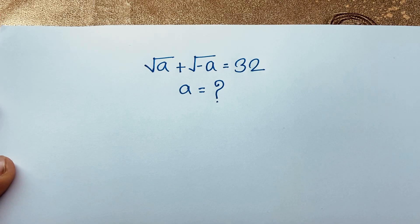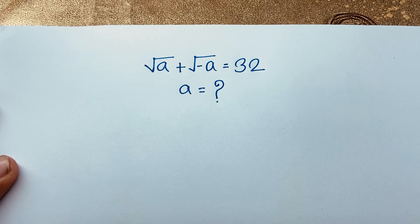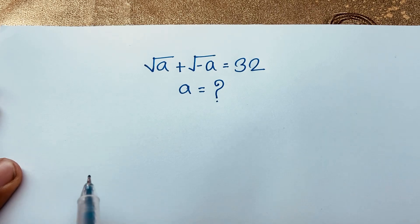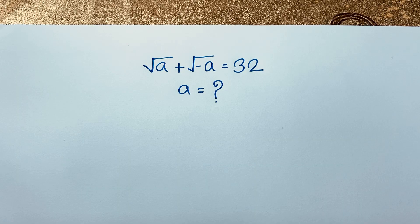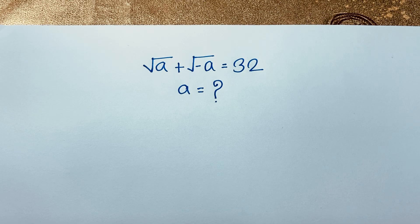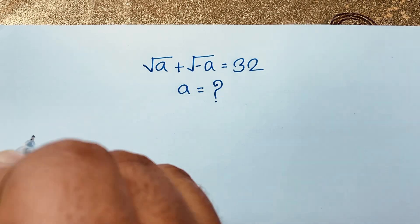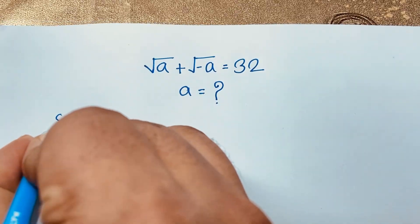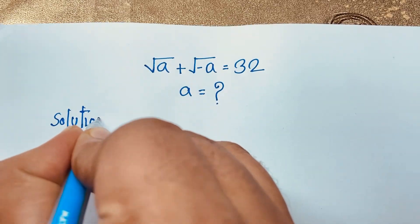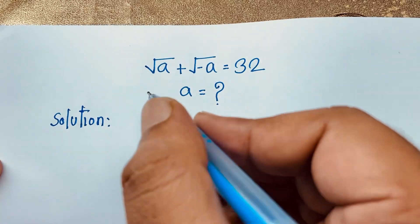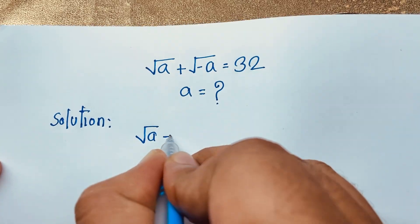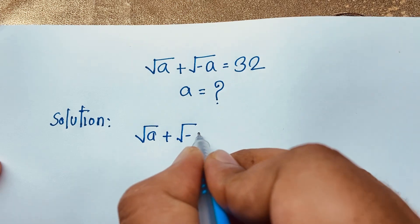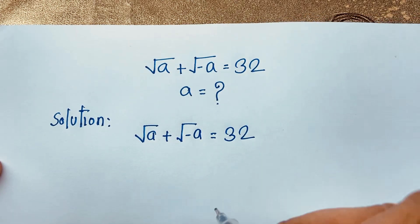Hello lovely people, welcome to Russell's classroom. Today we'll solve a nice math problem. The question is: square root of a minus square root of negative a is equal to 32. We'll find out the value of a in this viral math Olympiad question.